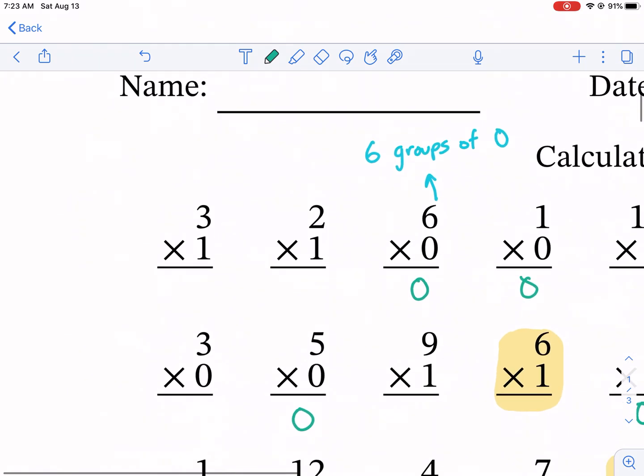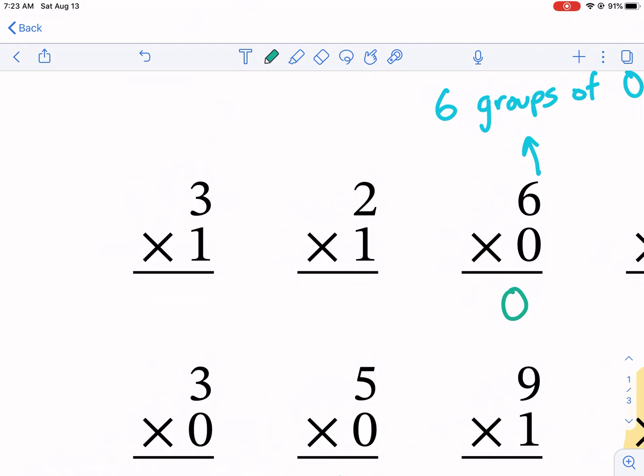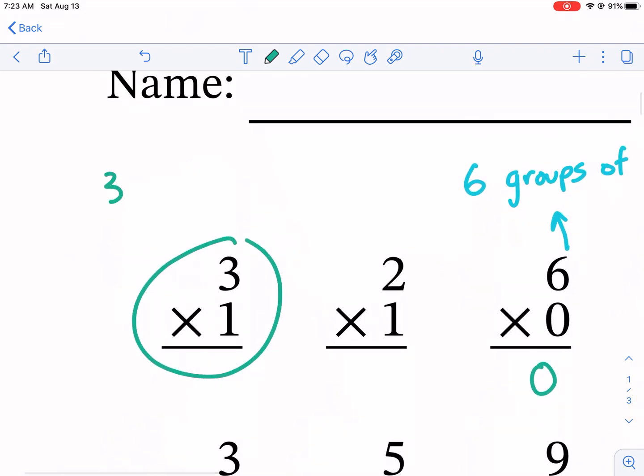One is very similar, pretty simple also, but let's break it down a little bit further. This problem would be called three groups of one. Anytime we're talking about multiplication, we're talking about groups of. So three groups of one. What would that look like? We have three groups here, one, two, three, and then how many are in each group? We have one in each group.